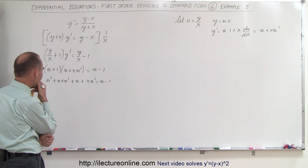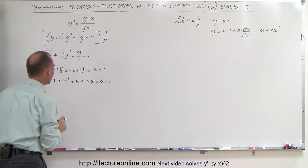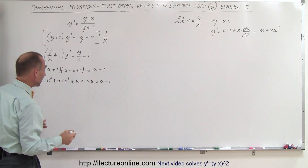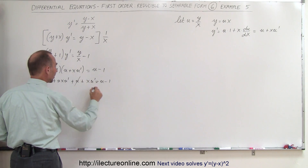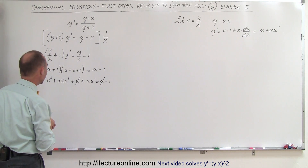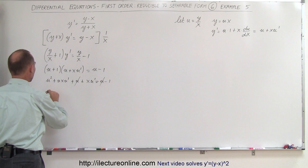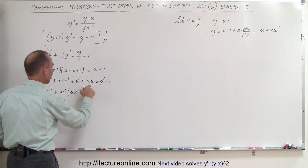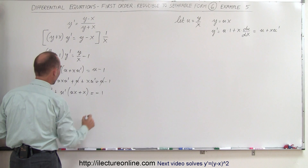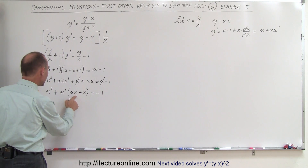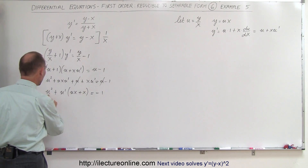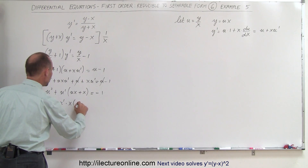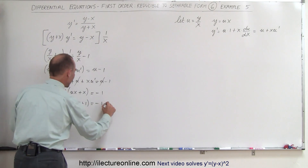That's quite a mess, but let's continue. Notice we can simplify things quite a bit: we have a u on this side and a u on that side that cancel out. Now things look a lot better. We factor out u prime from two terms, ending up with u squared plus u prime times the quantity u times x plus x, equal to minus 1. We can then factor out an x and move u squared over, giving u prime times x times (u plus 1) equals minus 1 minus u squared.